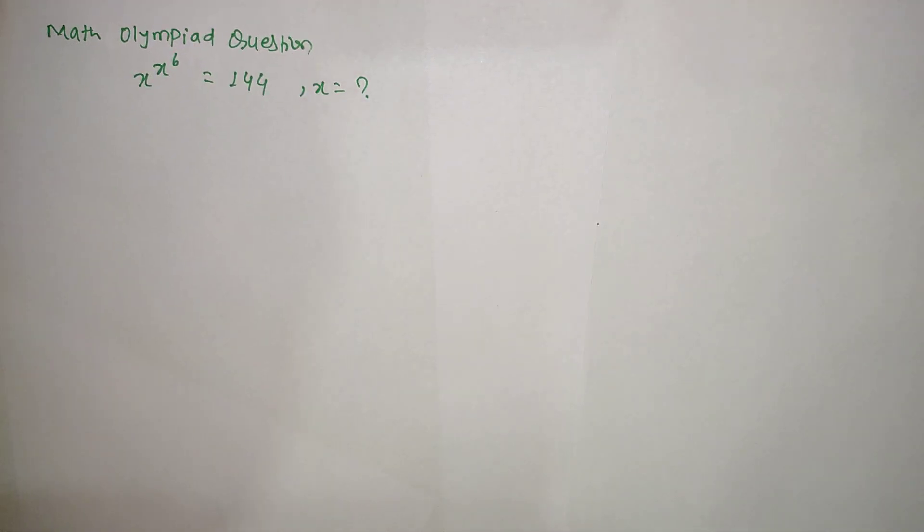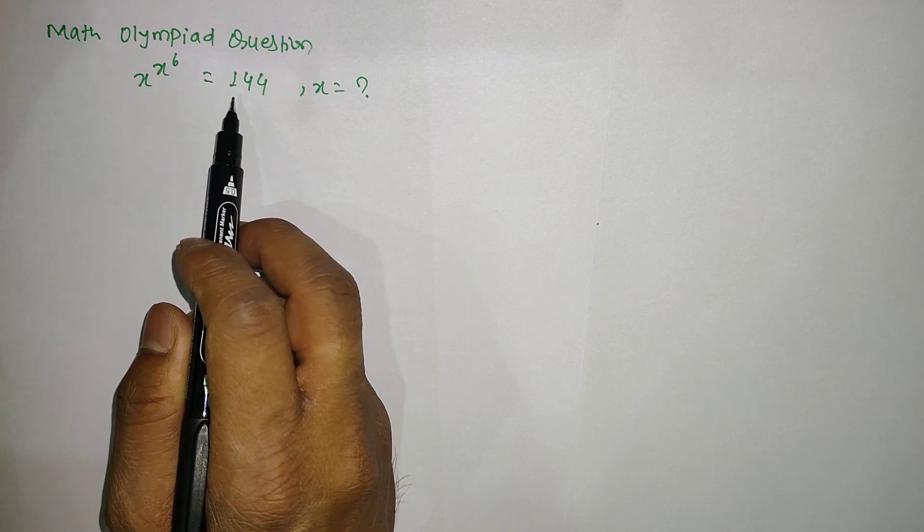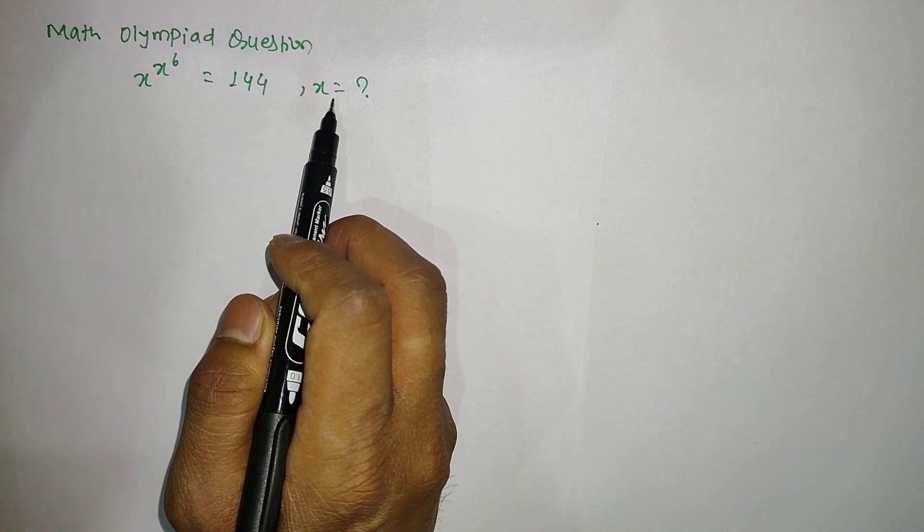Hello everyone, welcome to a new video. This is Diges here. Today in this video we have a Math Olympiad question where it is given that x to the power x to the power 6 equals 144, and we have to find the value of x.